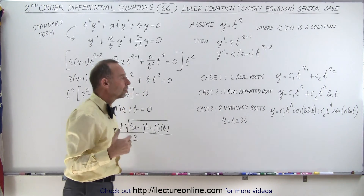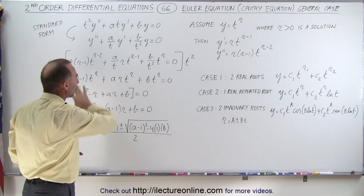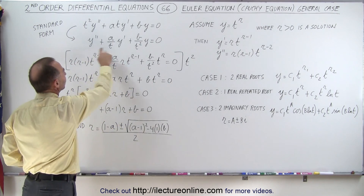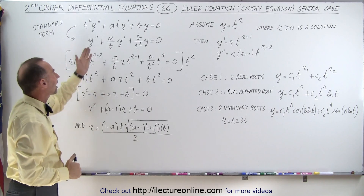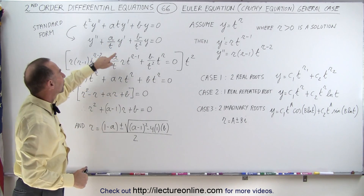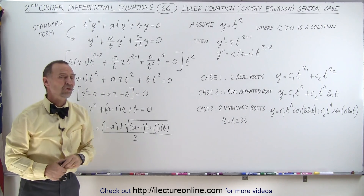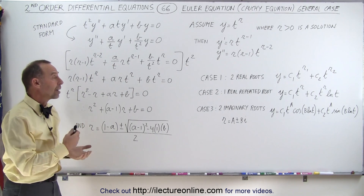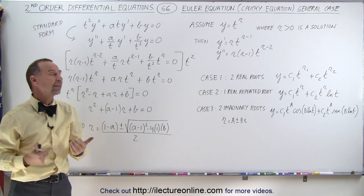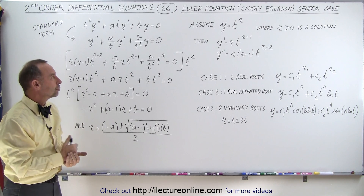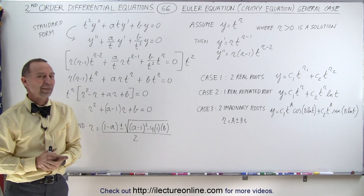Those are the three different solution sets for the Euler equation format. The equation must look exactly like that form, with constants a and b and the t and t squared terms in the denominator. Now let's do some examples so you can see how to apply this. Once you have the hang of it, it's a fairly straightforward method to use for this type of equation — the Euler equation.